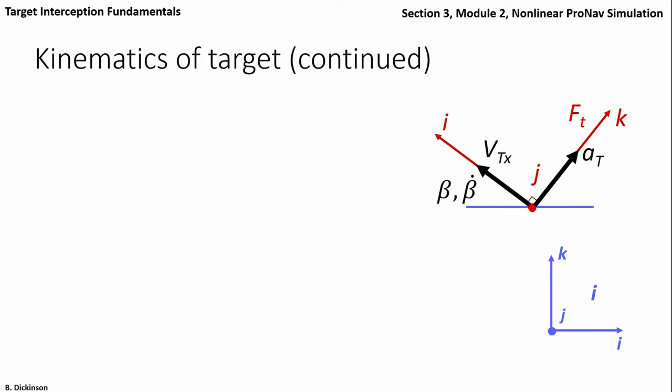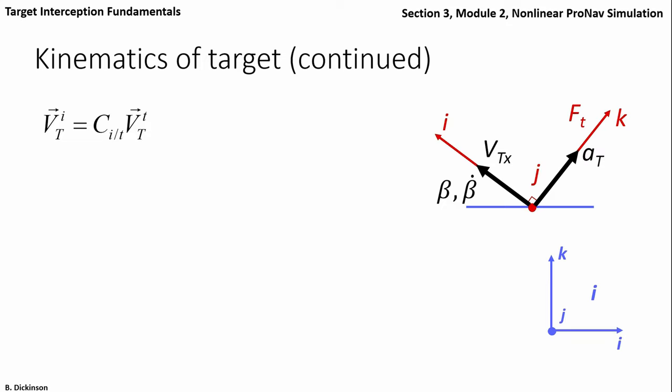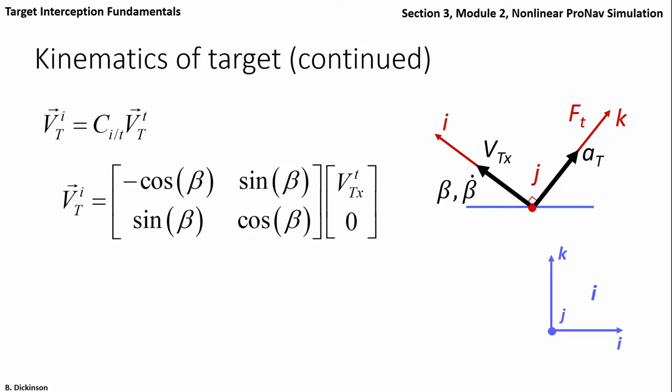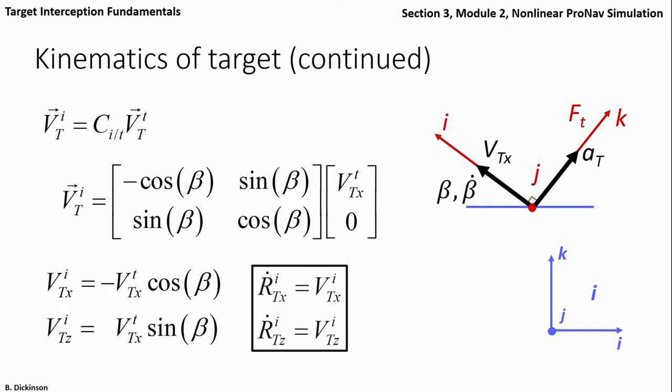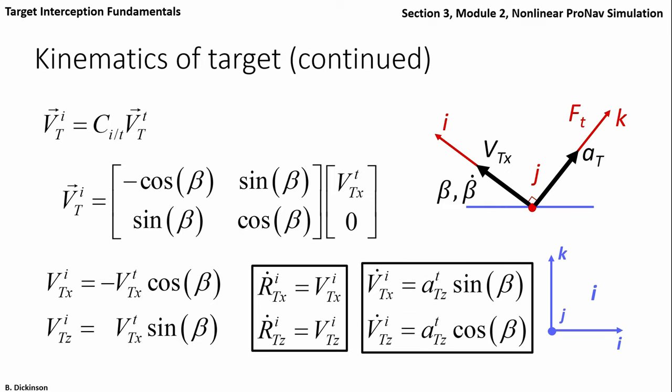Continuing on, let's transform the target velocity vector resolved in the target coordinate system into the inertial coordinate system. We have two simple equations relating the velocity of the target resolved in the target coordinate system to the inertial coordinate system through the heading angle beta. The time rate of change of the range resolved in the inertial coordinate system is simply equal to the target velocity components also resolved in the inertial coordinate system. We can do a similar thing for target acceleration — transforming again into the inertial coordinate system. That's related to the time rate of change of the velocity resolved in the inertial coordinate system. So the equations in the blocks are part of our kinematics resolved in the inertial coordinate system.